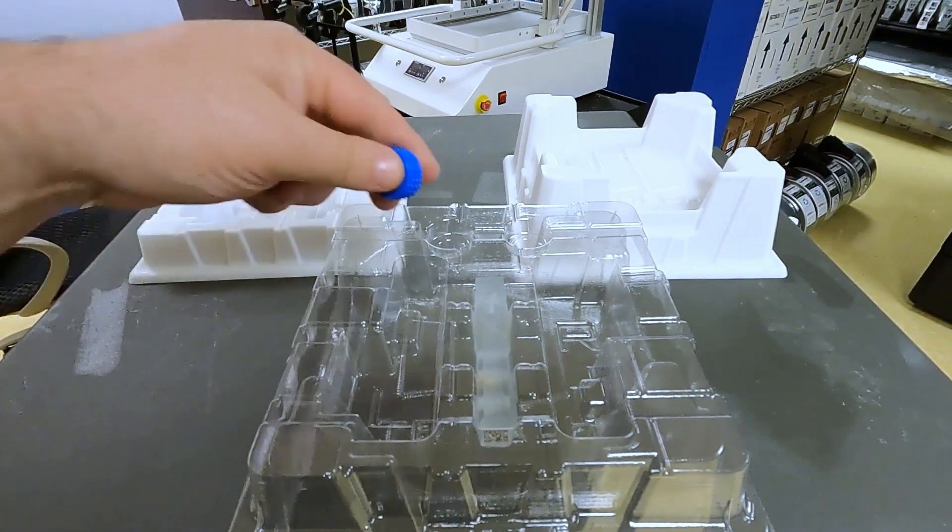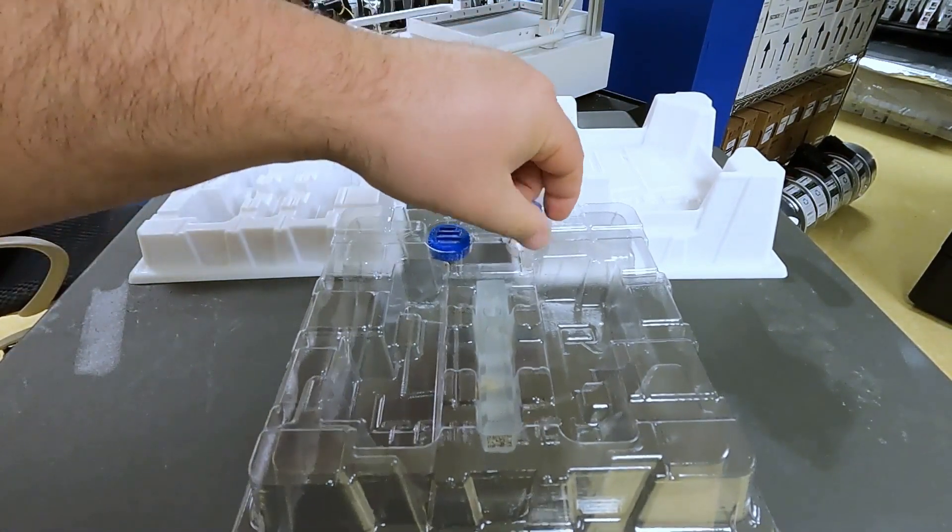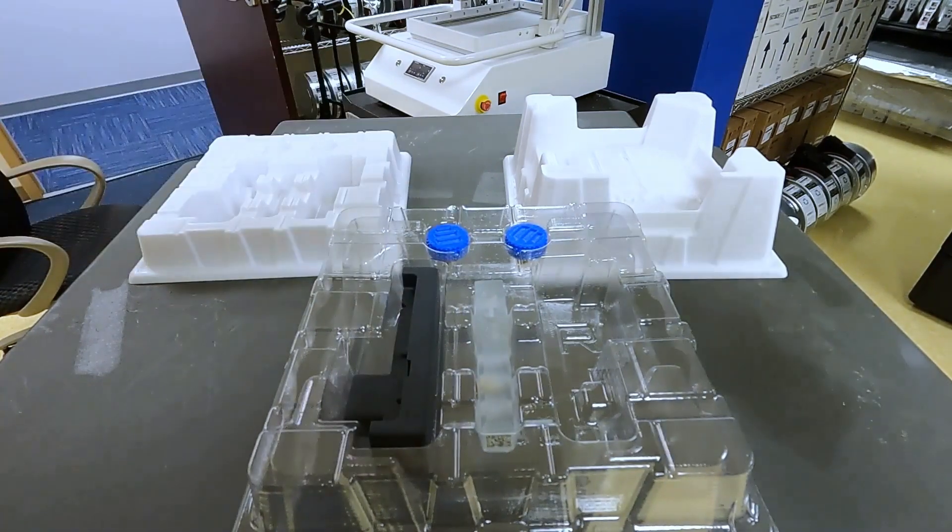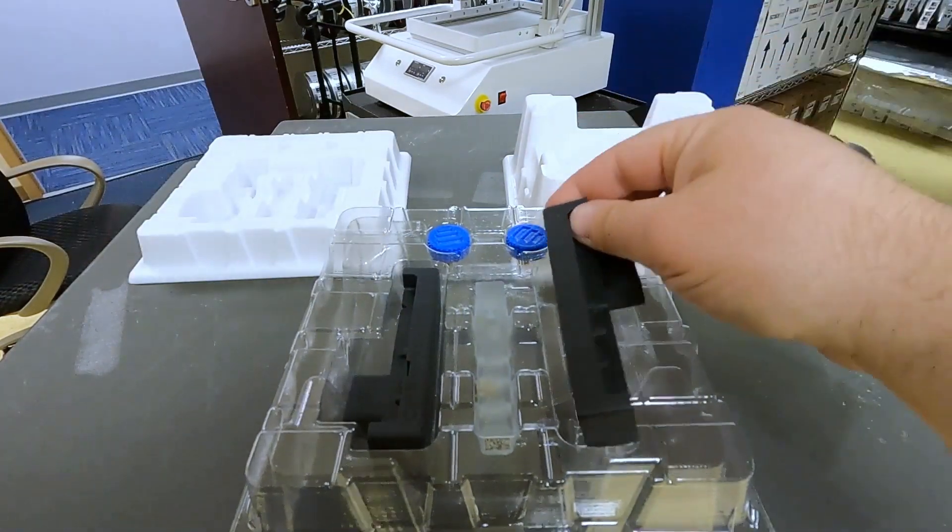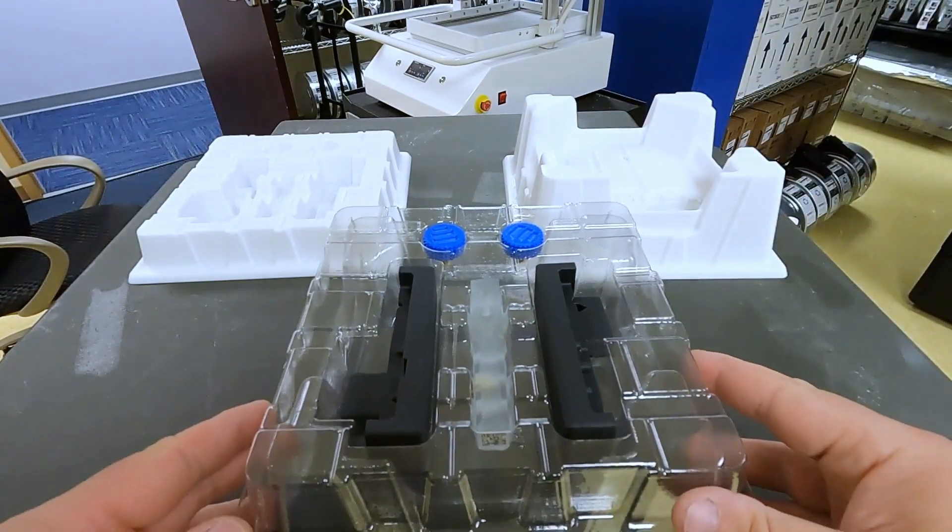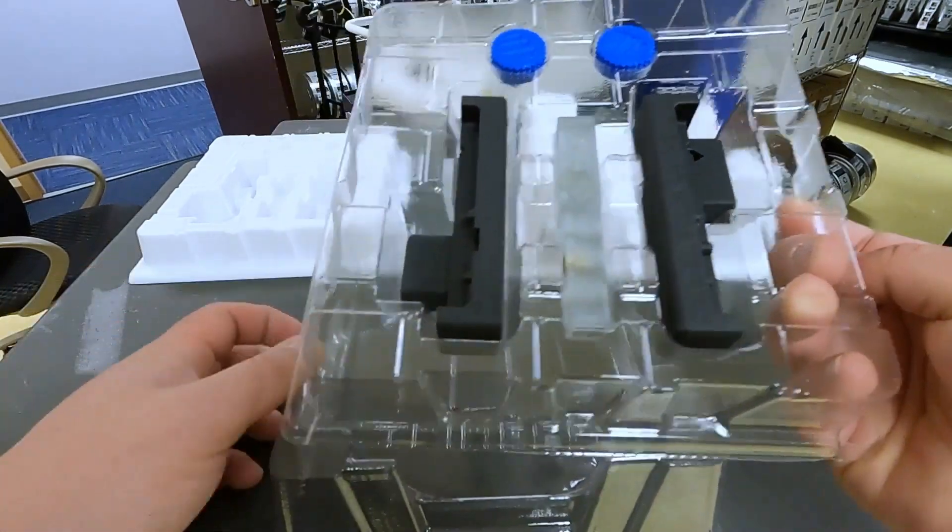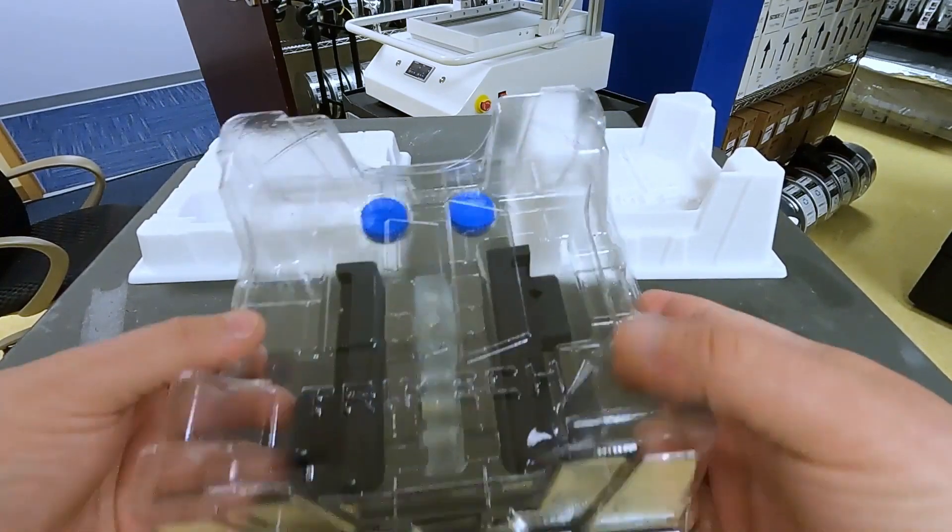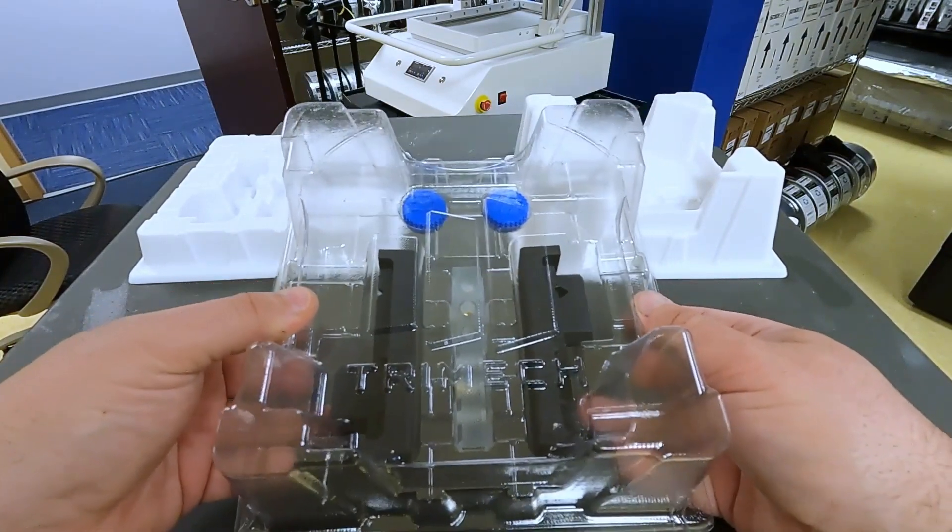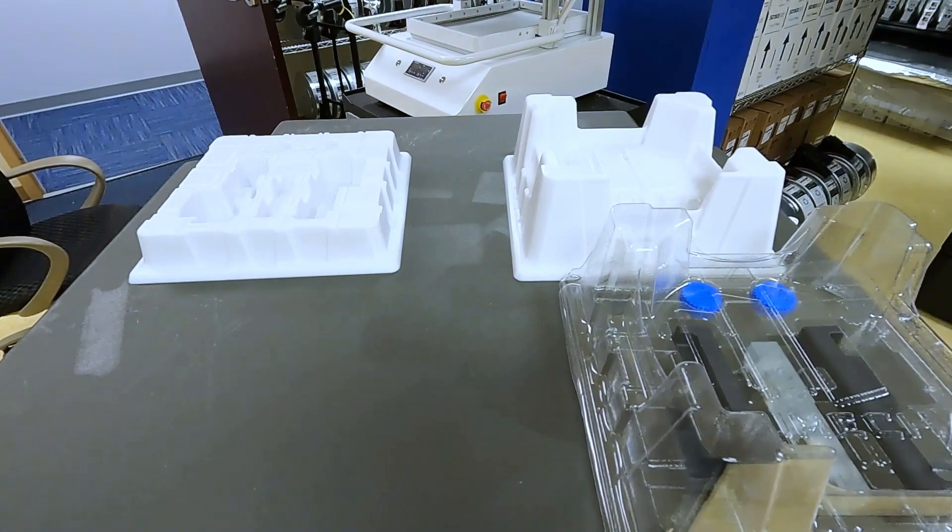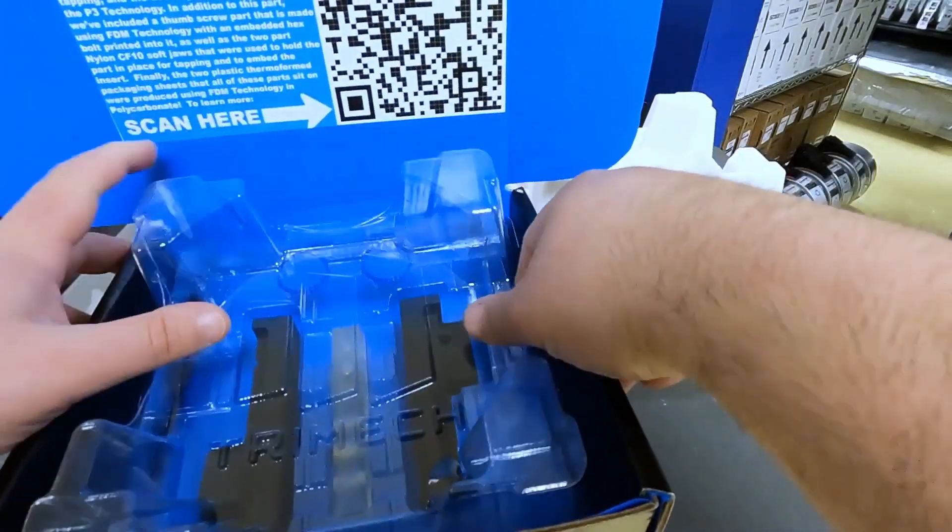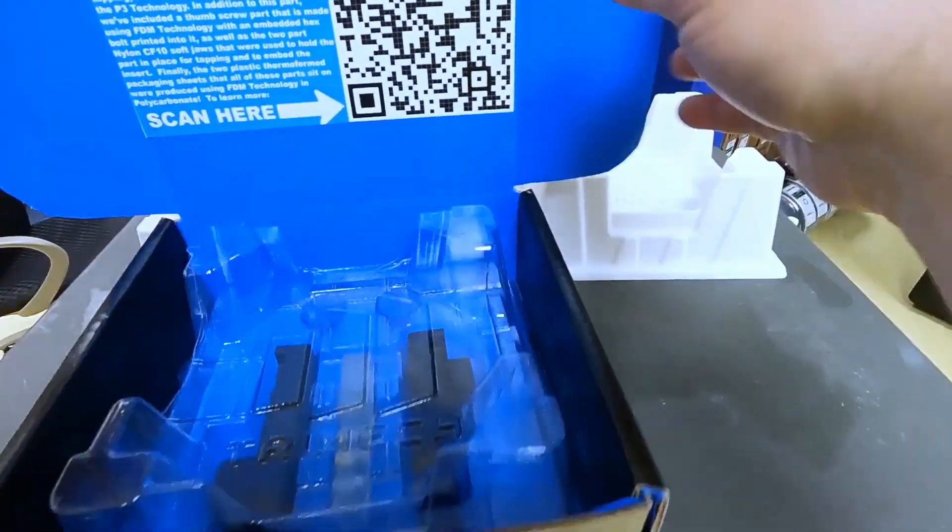Here's the Origin 1 demo part. Here are my two thumb screw parts. And here's the left and right half of our nylon CF-10 soft jaws. We'll go ahead and close them up with the cover. And now, if I take this box out and place the parts in there, you can see they will fit very nice and snug and be safe for transportation purposes.